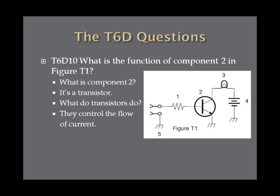What is the function of component two in Figure T1? Component two is a transistor. You have to remember what transistors do — they control the flow of current. That's what you're looking for on the exam: the transistor controls the flow of current.